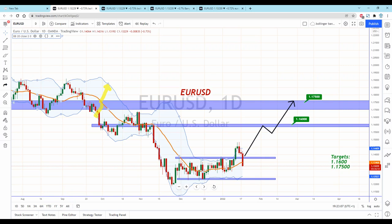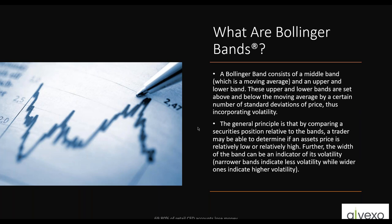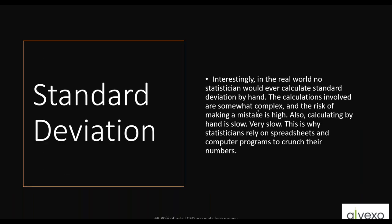Let's understand what standard deviation is. In its simplest form, a moving average — which is the center point — is the average of all the data points in a given set. The mean is simply the average of the data points. You take the closing prices and divide by 20. Standard deviation is then calculated based on that mean. The calculations involved are somewhat complex and carry a high risk of manual error, so they're always computed automatically.